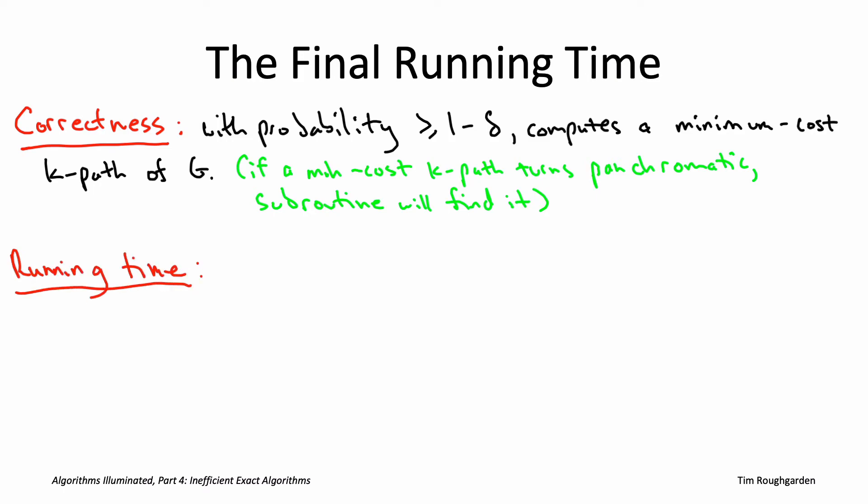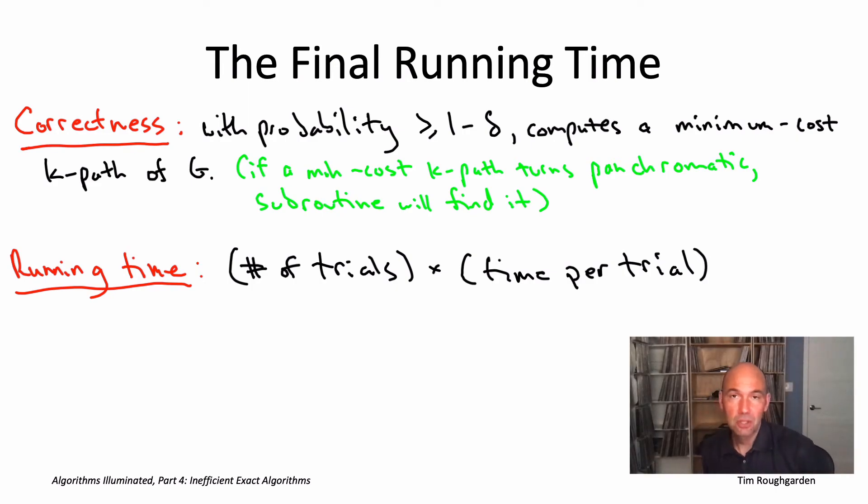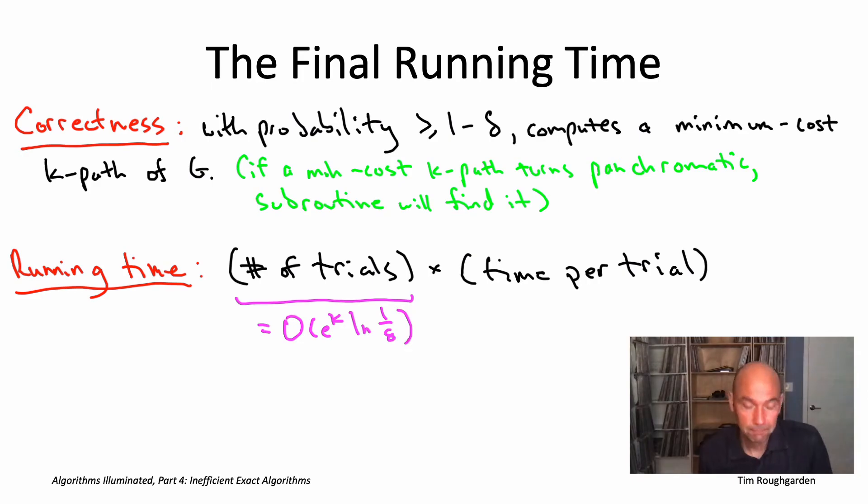How about the running time of the algorithm? Pretty much all the algorithm does is run these capital T independent random trials. So the running time is just going to be the number of trials capital T times the running time per trial. So the number of trials we computed explicitly, it's e to the k divided by root 2 pi k times log 1 over delta. Let's just be a little bit sloppy with the upper bound and forget about that root k factor. Let's just call the number of trials O of e to the k times log 1 over delta. The time of a trial is completely dominated by the invocation of the dynamic programming subroutine for computing a minimum cost panchromatic path. And if you recall, the running time of that algorithm by a Bellman-Ford style argument was 2 to the k times m, where m is the number of edges in the graph. So multiplying out, that gives us a running time of quantity 2 times e raised to the k power times the number of edges m times log 1 over delta, where delta is the user-supplied failure probability.